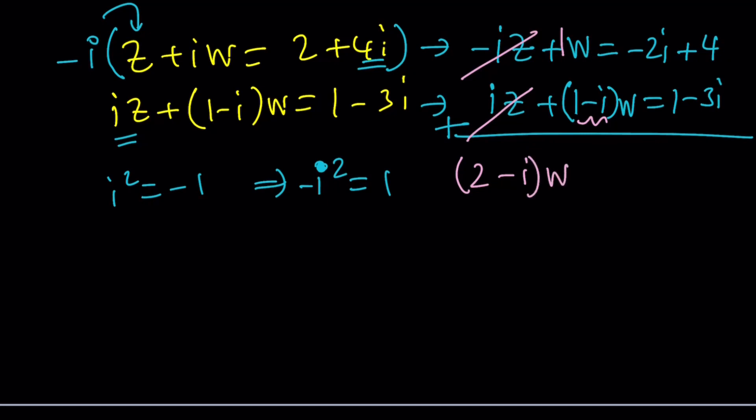On the left hand side. On the right hand side, we're going to add the real parts. 1 plus 4 is 5. And then negative 2I and negative 3I makes negative 5I.